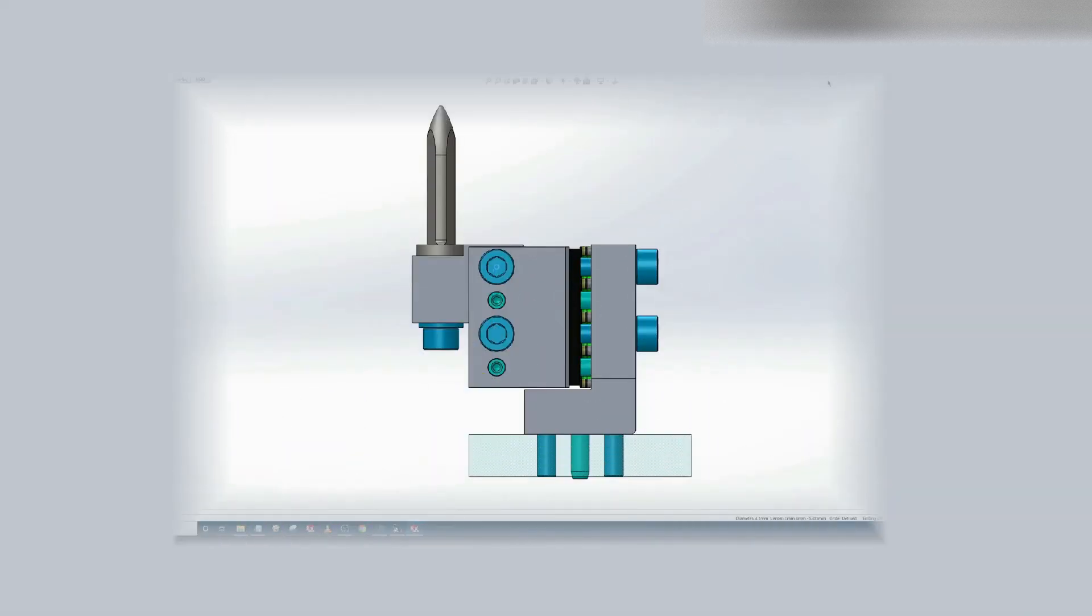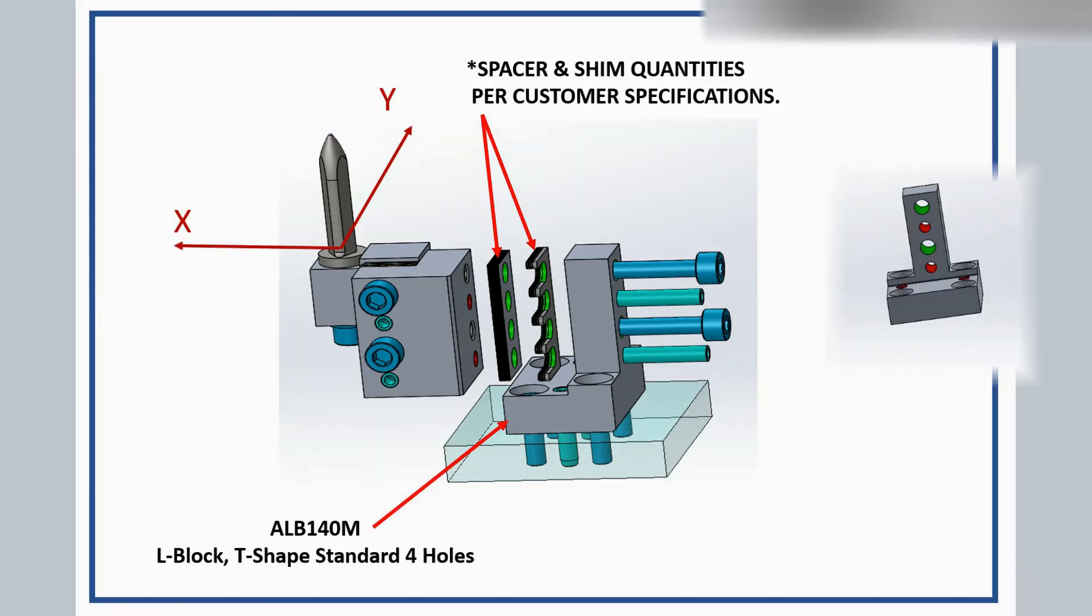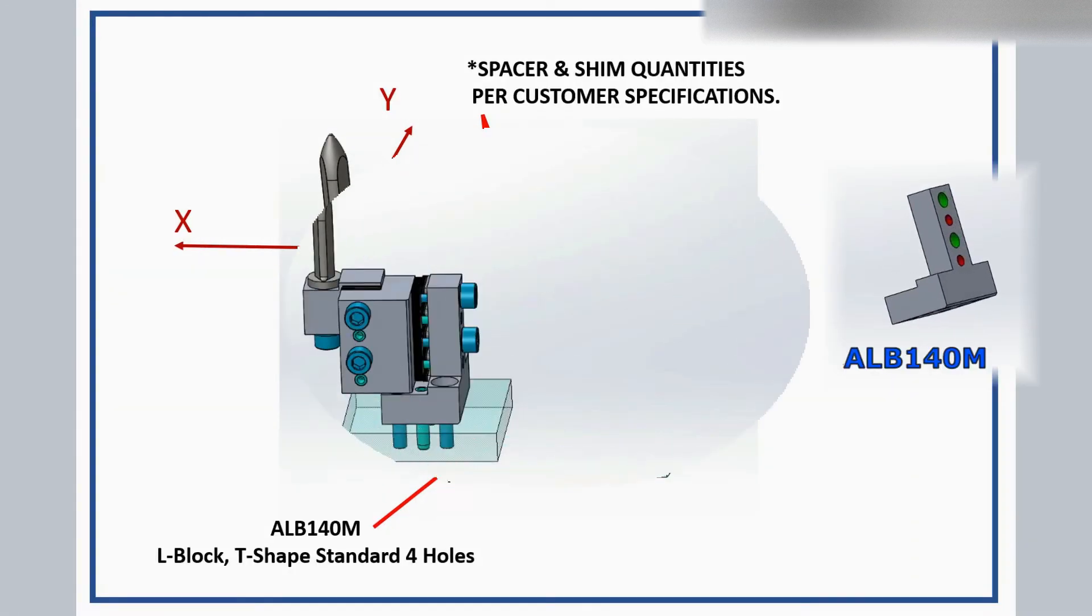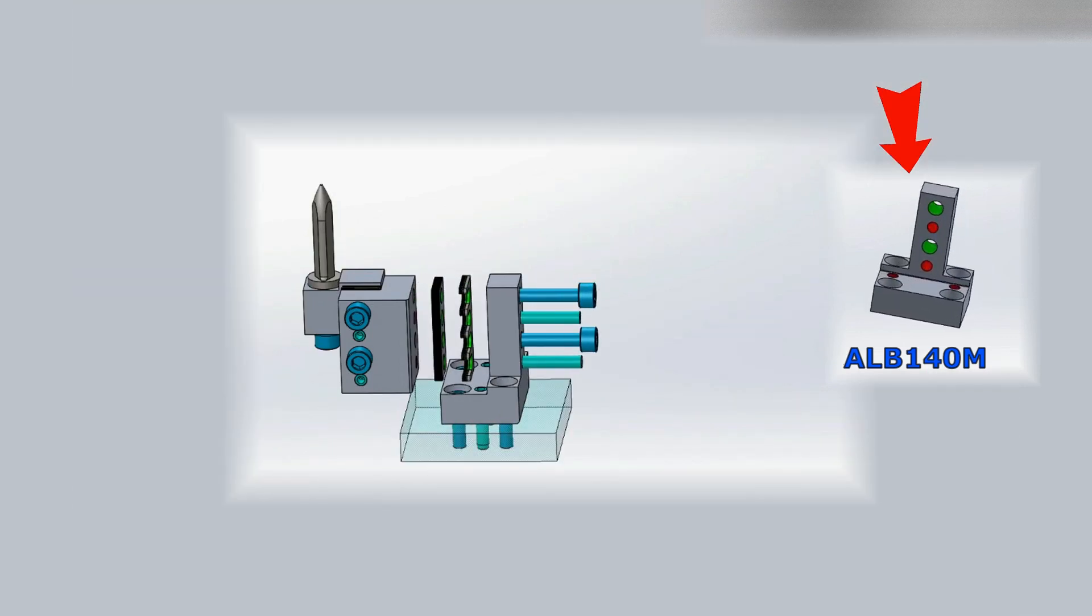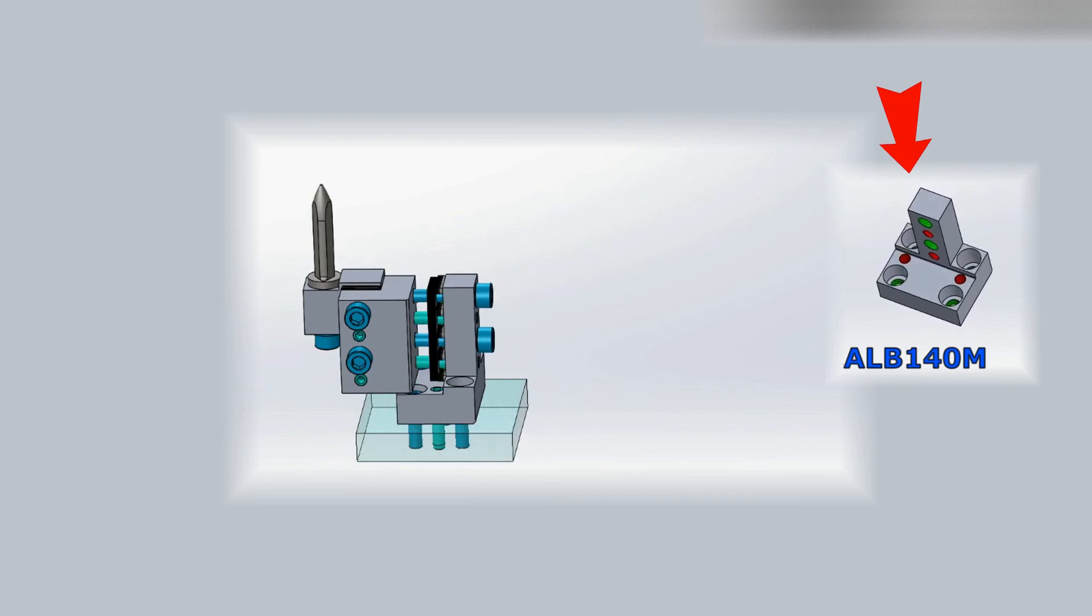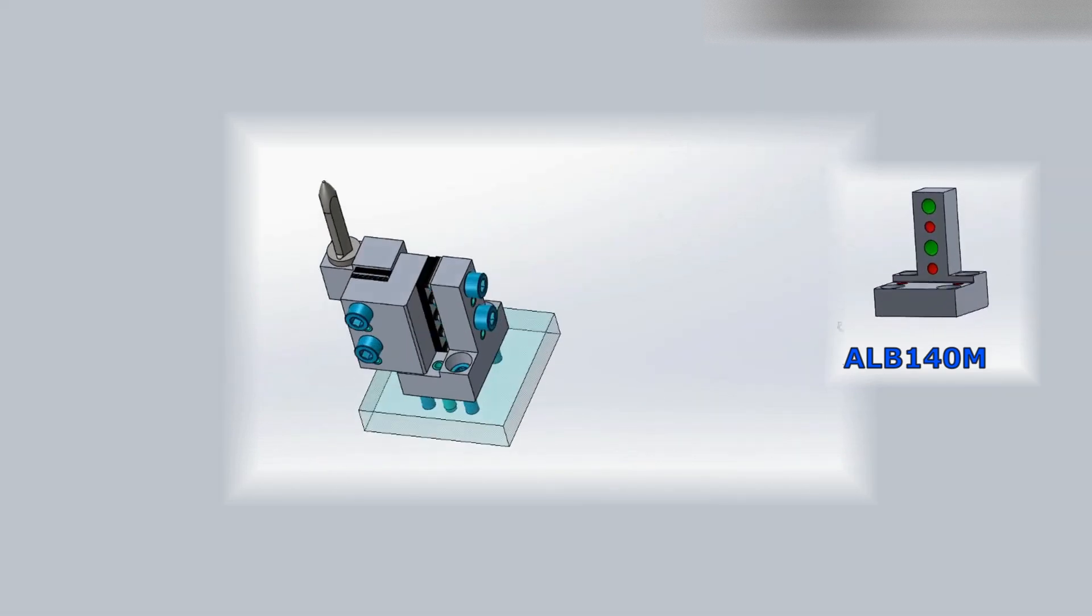Let's go to X adjustable directions. One spacer and one shim kit are also used for direction X, and also L block, T shape standard 4 holes, ALB140M, and fasteners, two socket head cap screws and two pull dowel pins.